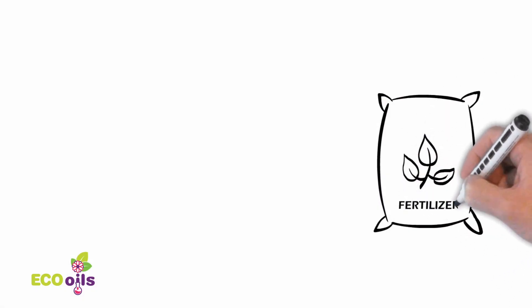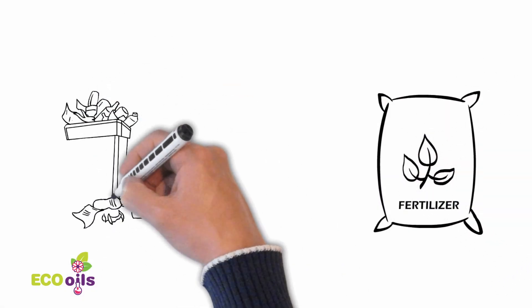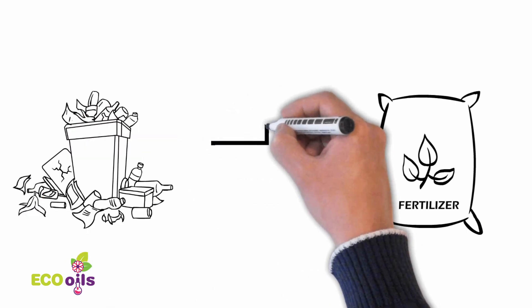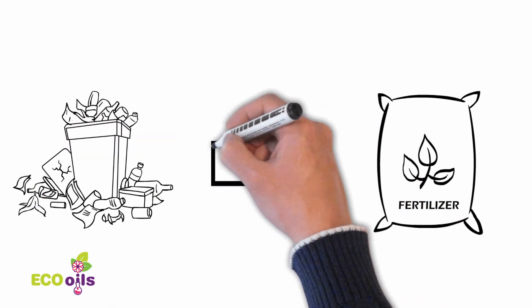Composting is the process of breaking down organic matter such as agriculture waste, food scraps, and yard waste into a nutrient-rich soil amendment.